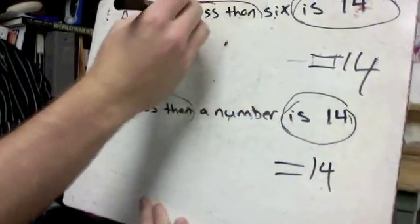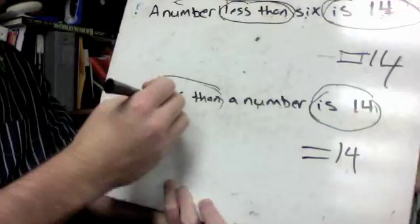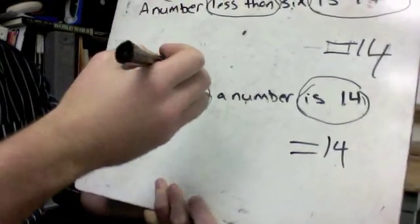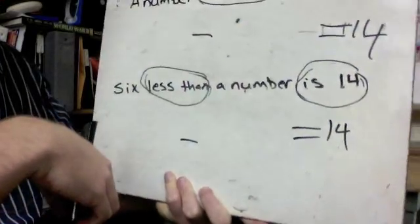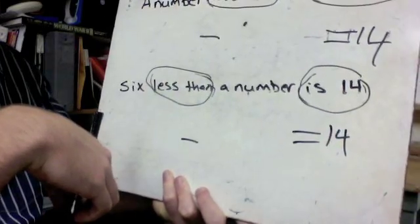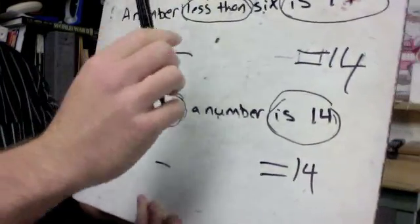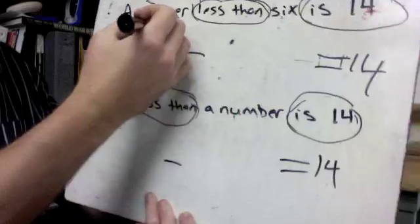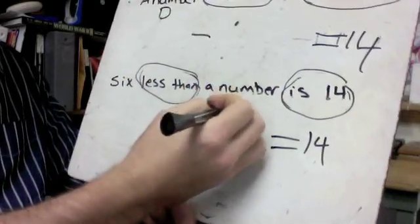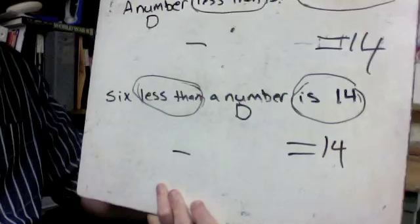We've got a less than. Less than is going to indicate subtraction. So we've got subtraction, we've got subtraction. Let's see. Other than that, we've got a number and we've got six. We've got to know a number. We can make up a variable. I'll use d. It doesn't matter what you use unless it should, unless it stands for something.